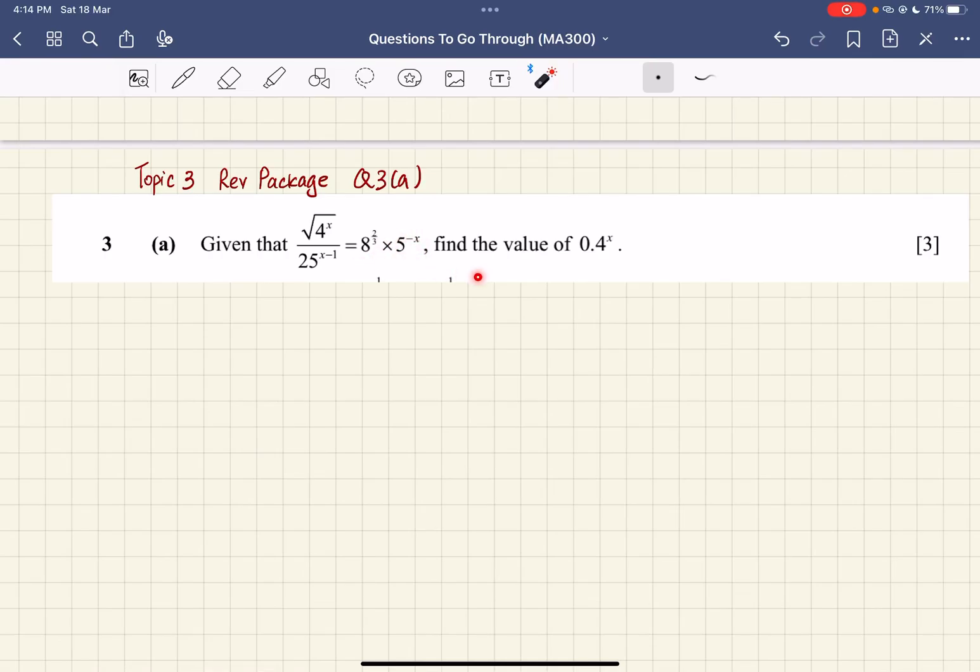Given the equation with two to the power of two-thirds times five to the power of negative x, you want to find 0.4^x. Now if you observe this equation, you can see that you'll think of base 2, and if you look at 25 and 5, you'll think about base 5 as well.